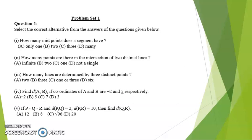Now we move on to problem set 1. Question number 1: Select the correct alternative from the answers of the questions given below. First, how many midpoints does a segment have? We know that a segment has one and only one midpoint. Therefore the correct answer is option 1: only one. Question number 2: How many points are there in the intersection of two distinct lines? When two lines meet, the point of intersection is just 1. So the correct answer is option C: 1.